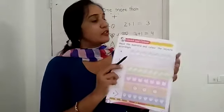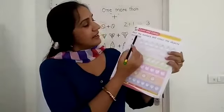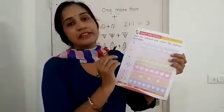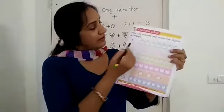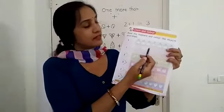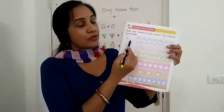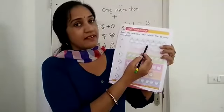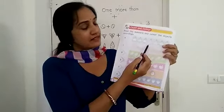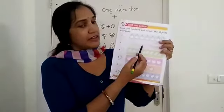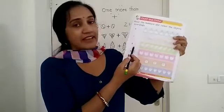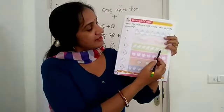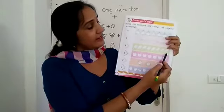Count and color. You will count the color. Read the numbers and color the objects accordingly. First of all, you will read the number, then count the pictures. Number four. One, two, three, four. So please color the four pictures. Then one. Color only one picture. And eight. One, two, three, four, five, six, seven, eight. Fill the color in eight pictures.